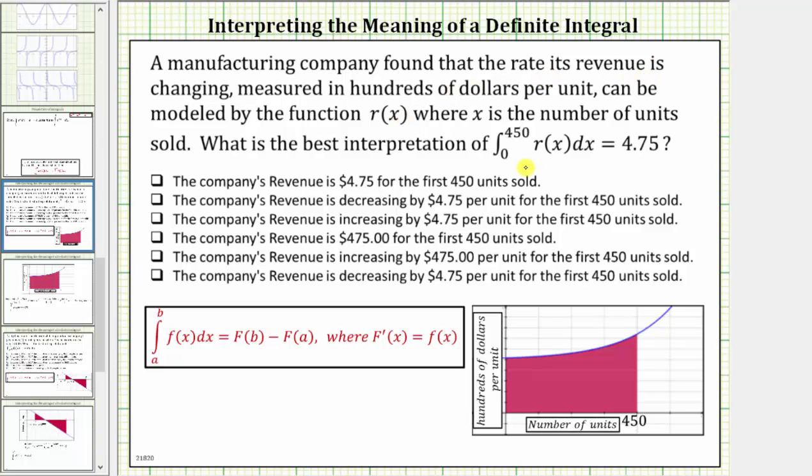Now if we wanted to model this definite integral using area, the first step would be to graph r(x), which we will assume is this blue function here. Then because we are integrating from 0 to 450, we would shade the area under the curve and above the horizontal axis from 0 to 450, which is shaded in red here.